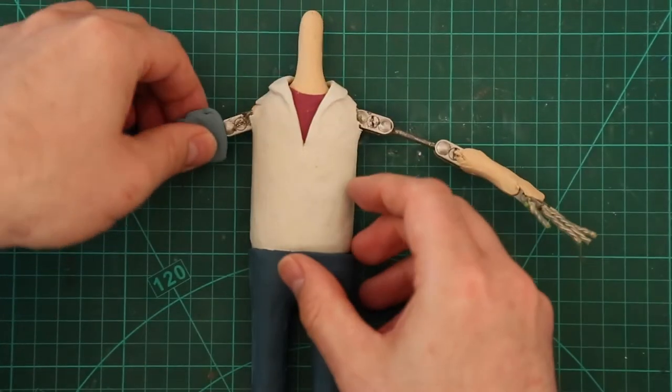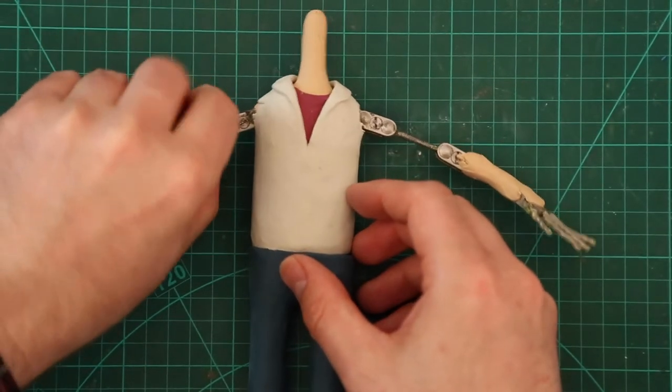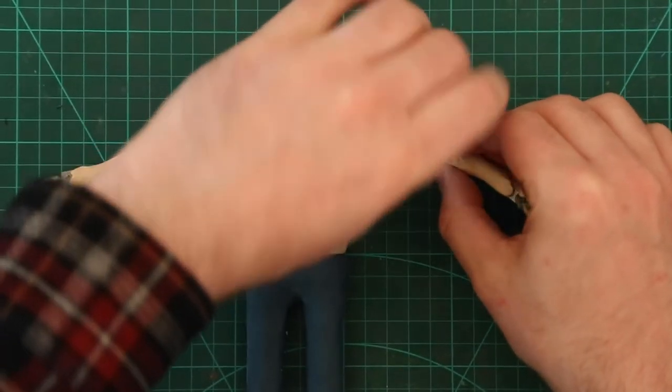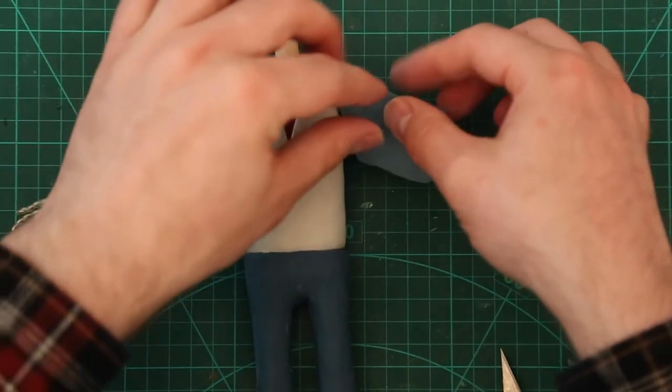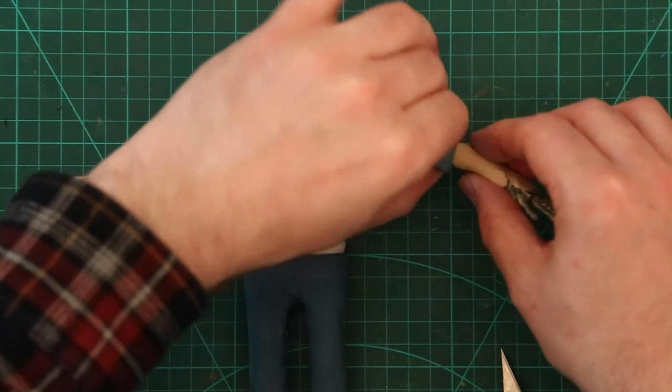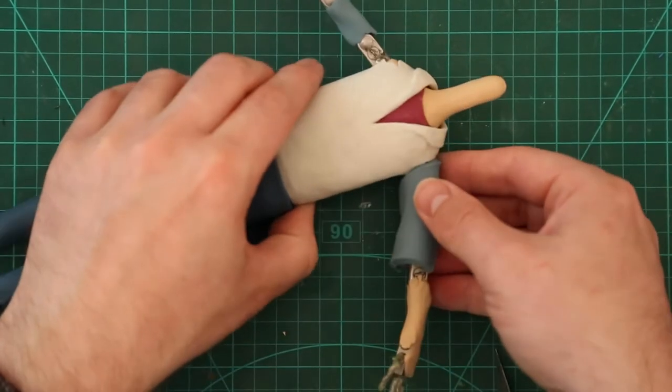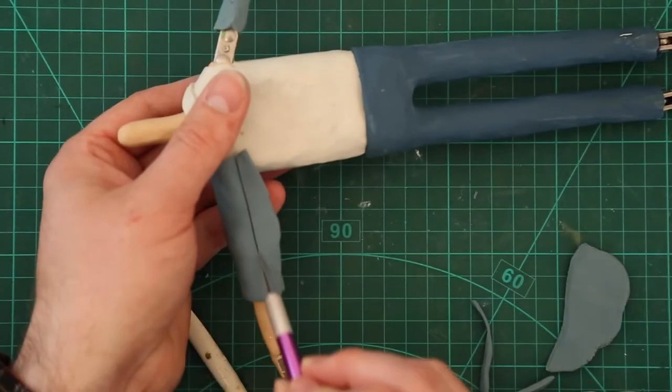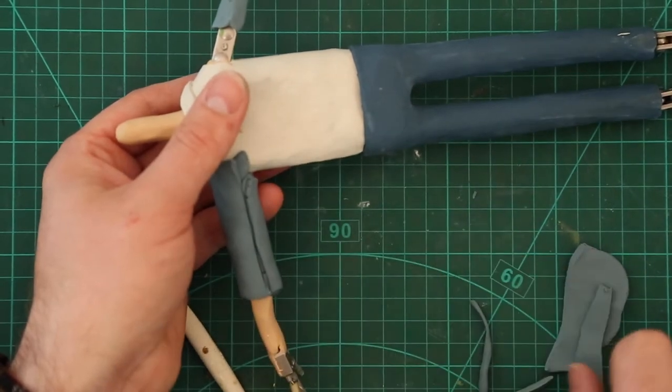Now I'm just fleshing out the arms. It's always weird doing the forearms first before everything else. Now I'm just doing the sleeves of the denim jacket and just bulking that out.